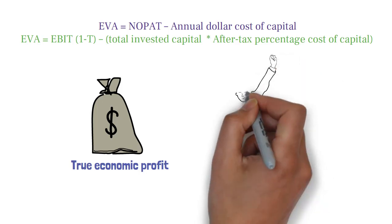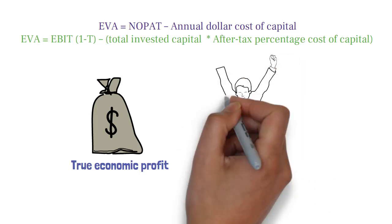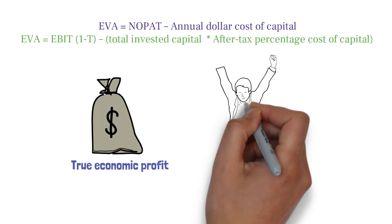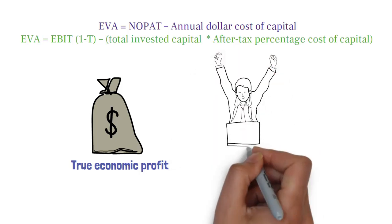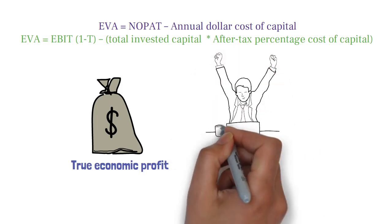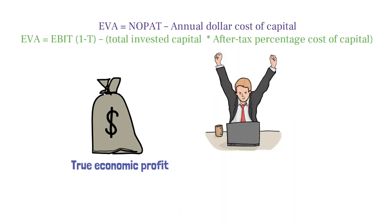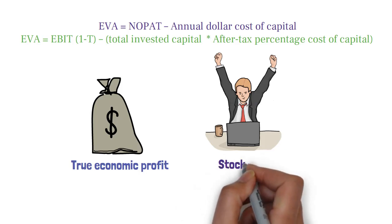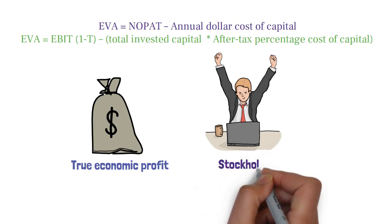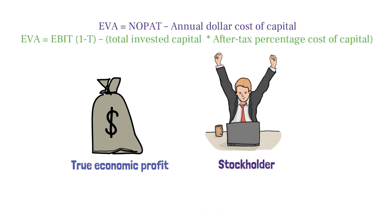If EVA is positive, then after-tax operating income exceeds the cost of capital needed to produce that income, and management's actions are adding value for the stockholders.